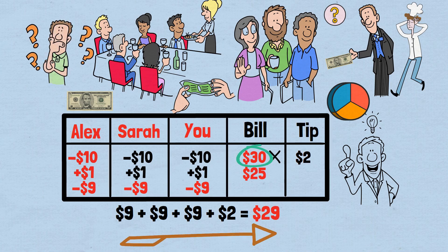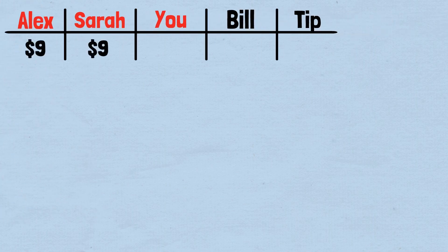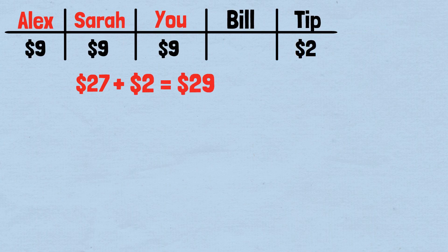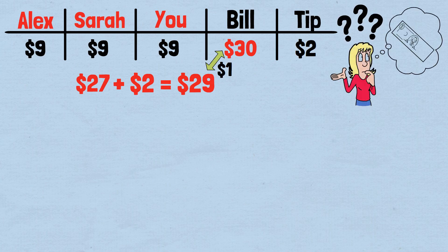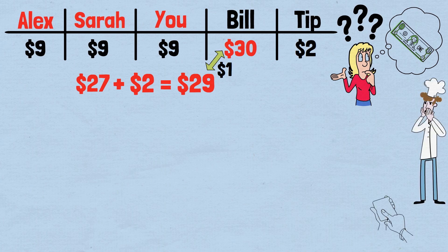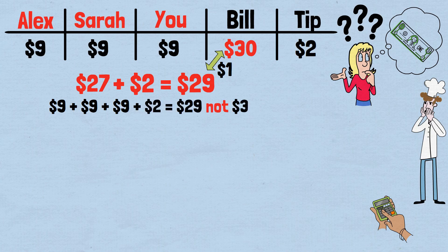The calculation seems straightforward enough. You paid $9 each — that's $27 total — plus the busboy's $2 tip, which gives us $29. Since you originally paid $30, there's clearly $1 missing somewhere. This reasoning feels so natural that most people immediately start hunting for the lost dollar. Did the server make another mistake? Did someone miscalculate? The arithmetic seems ironclad: $9 plus $9 plus $9 plus $2 equals $29, not $30.